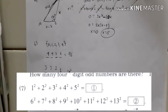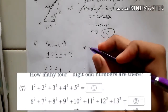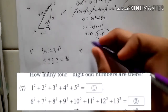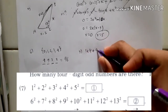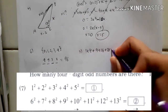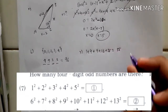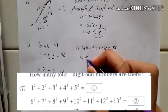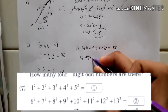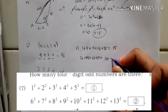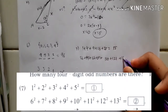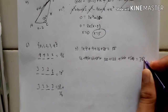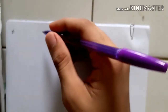And now for number 7, you just add them up: 1 squared plus 2 squared plus 3 squared plus 4 squared plus 5 squared, which is 1 plus 4 plus 9 plus 16 plus 25, equaling 55. And the second line is 36 plus 49 plus 64 plus 81 plus 100 plus 121 plus 144 plus 169, giving an answer of 764.